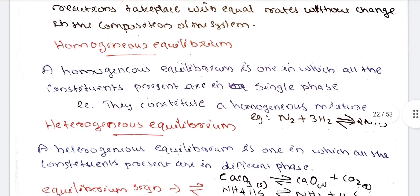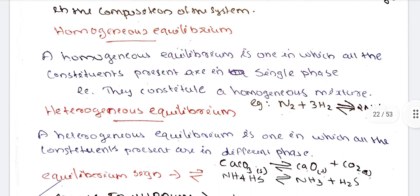This is the homogeneous equilibrium and heterogeneous equilibrium. What is the homogeneous equilibrium? A homogeneous equilibrium is one in which all the constituents present are in single phase. You have all reactants in one state. You have all reactants in one phase. If you have solid, liquid, gaseous state, you have three phases. If you have a single phase, you have reactants or product.